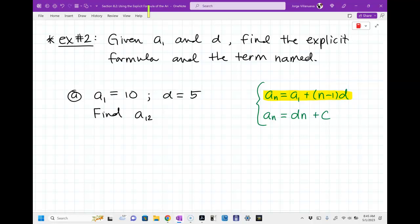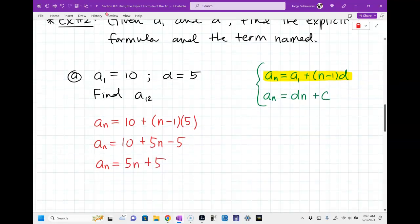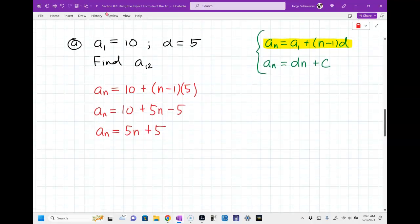So, here we go. a sub n is equal to a sub 1. That's going to be 10 plus n minus 1 times 5. So there's my explicit formula. Now, you can always simplify it if you want to make it easier to plug numbers in. You don't have to. But let's go ahead and simplify it. So this would be a sub n is equal to 10 plus 5n minus 5. And let's continue to simplify. a sub n is equal to 5n. 10 minus 5 is 5. So here you go. There's my equation.